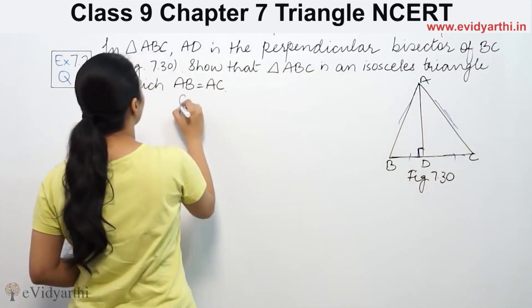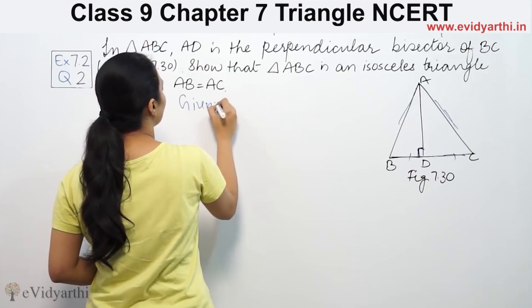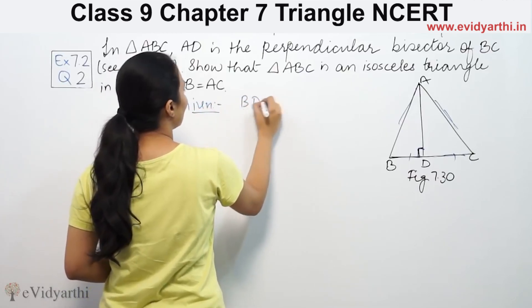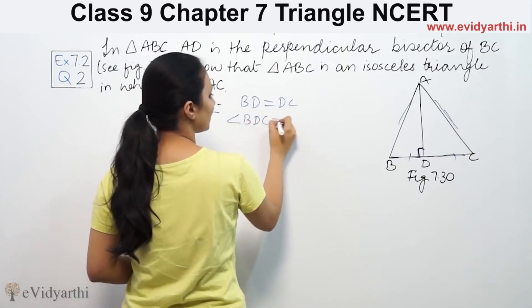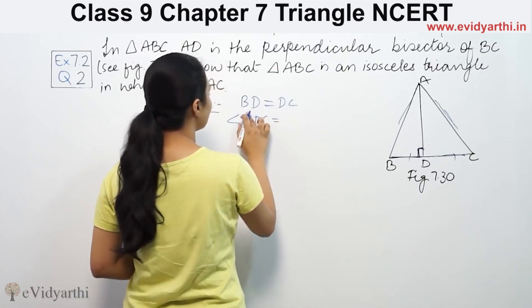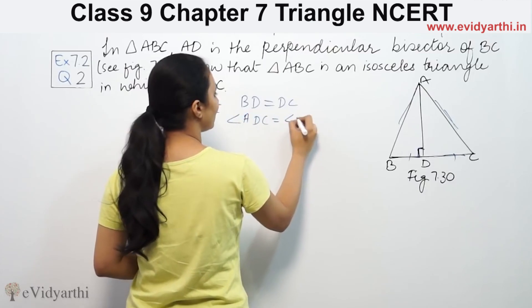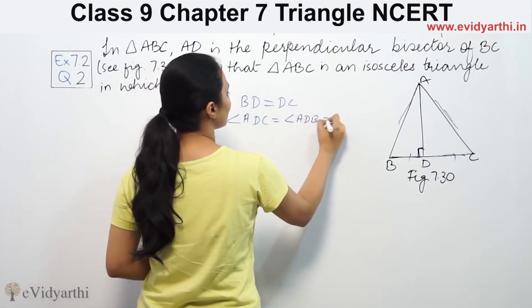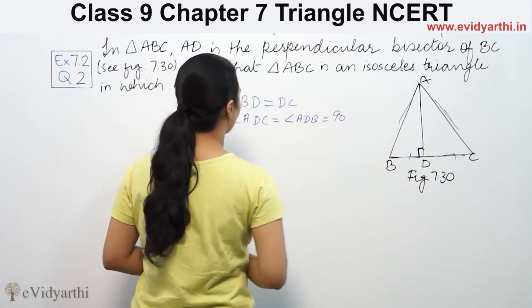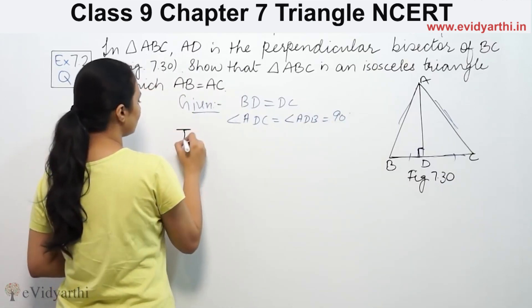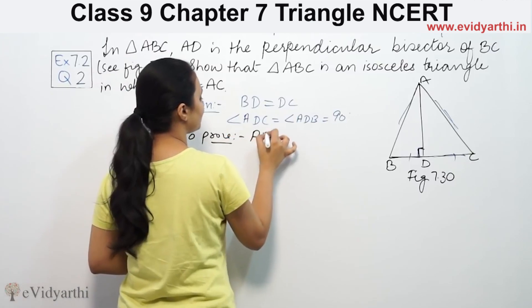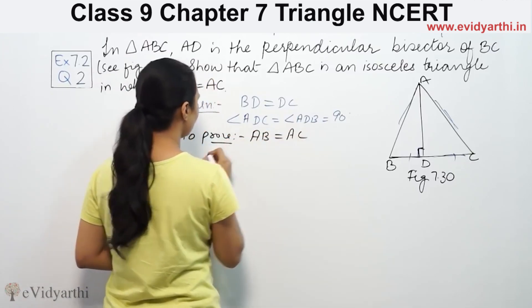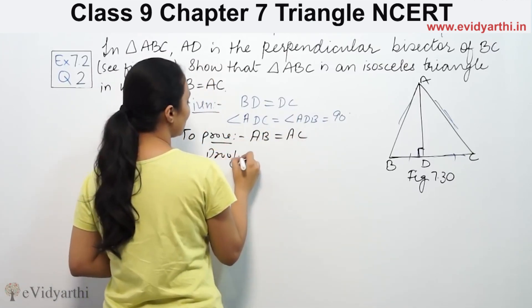We have given that BD is equal to DC, and angle ADB is equal to angle ADC is equal to 90 degrees. We have to prove that AB is equal to AC.